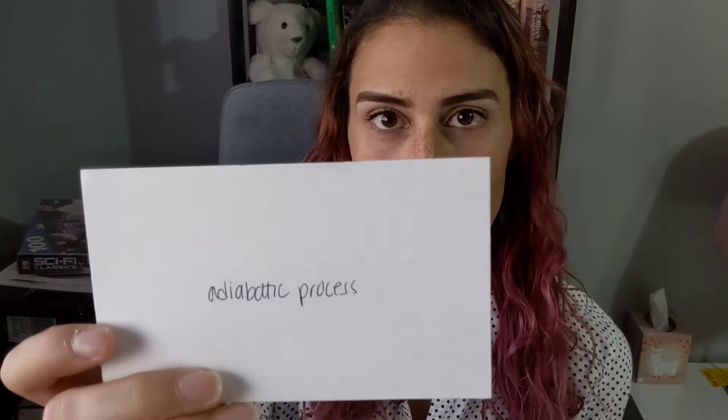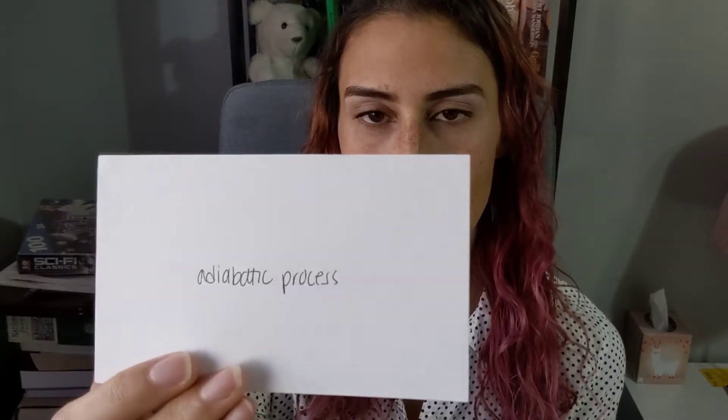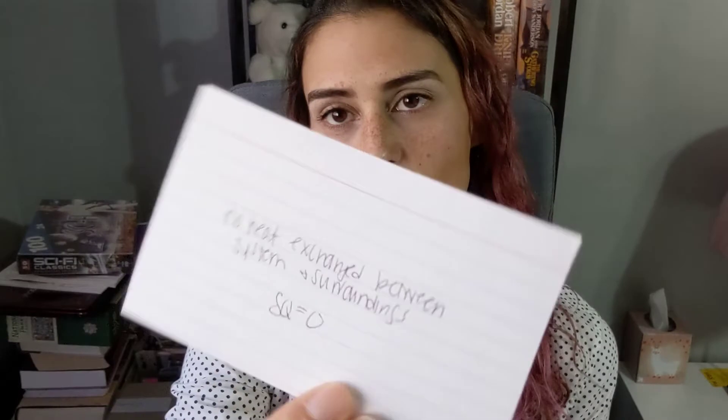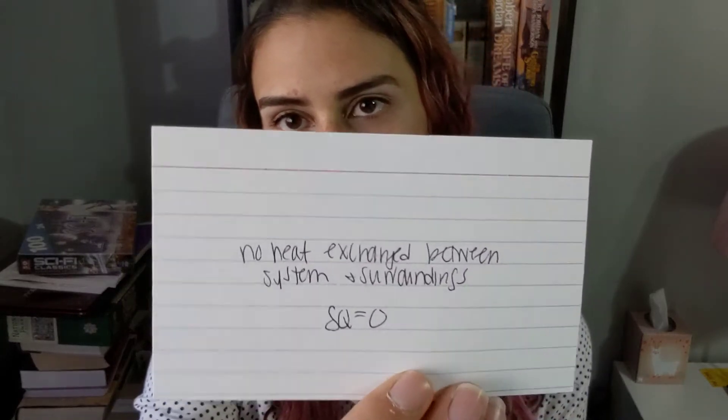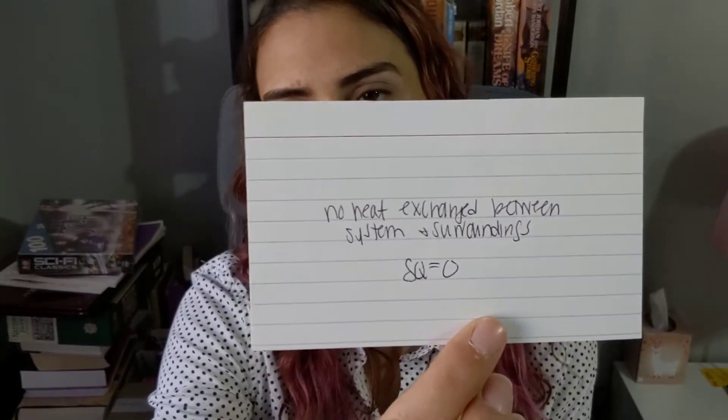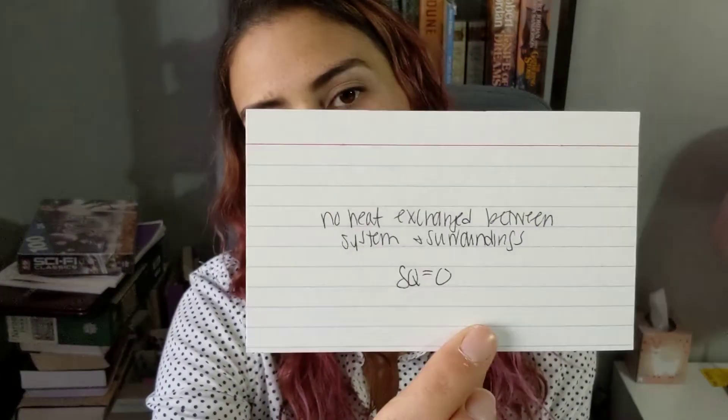An adiabatic process is one in which no heat is exchanged between the system and the surroundings, so delta Q equals zero.